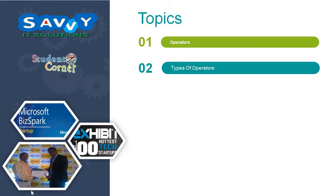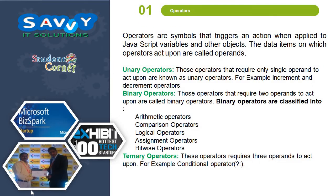So now Operators and types of Operators we are discussing. Operators are symbols that trigger an action when applied to JavaScript variables and other objects. The data items on which Operators act upon are called Operands. They are classified into Unary Operators, Binary Operators, and Ternary Operators.